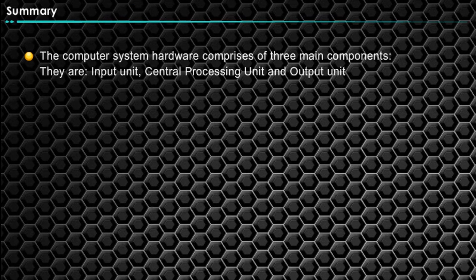Today we have learnt that the computer system hardware comprises of three main components: input unit, central processing unit, and output unit.